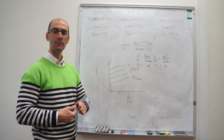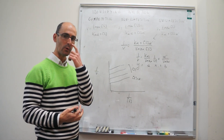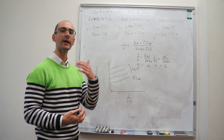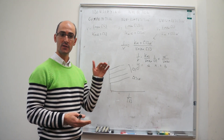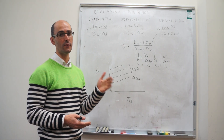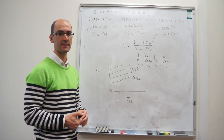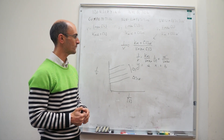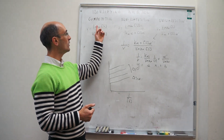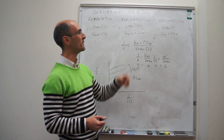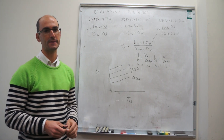The fingerprint for uncompetitive inhibition is that when you do the Lineweaver-Burk representation and compare it to the uninhibited case, the slope of the lines doesn't change but the y-intercept gets higher. That explains how to identify whether you have competitive, non-competitive, or uncompetitive inhibition using Lineweaver-Burk plots.